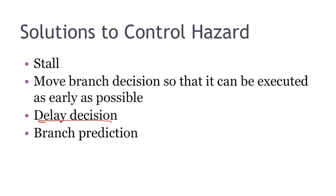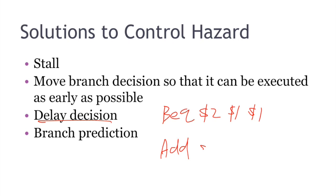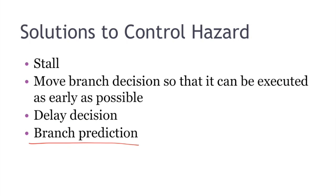And the third way is the delay decision. Delay decision basically says that the instruction after the branch instruction will always be executed. So we need to put some irrelevant instruction after the branch instruction, so no matter whether the branch is taken or not, we will always execute that. In that way we can save one line of bubble. And the last solution is branch prediction, which is the one we want to focus on today.